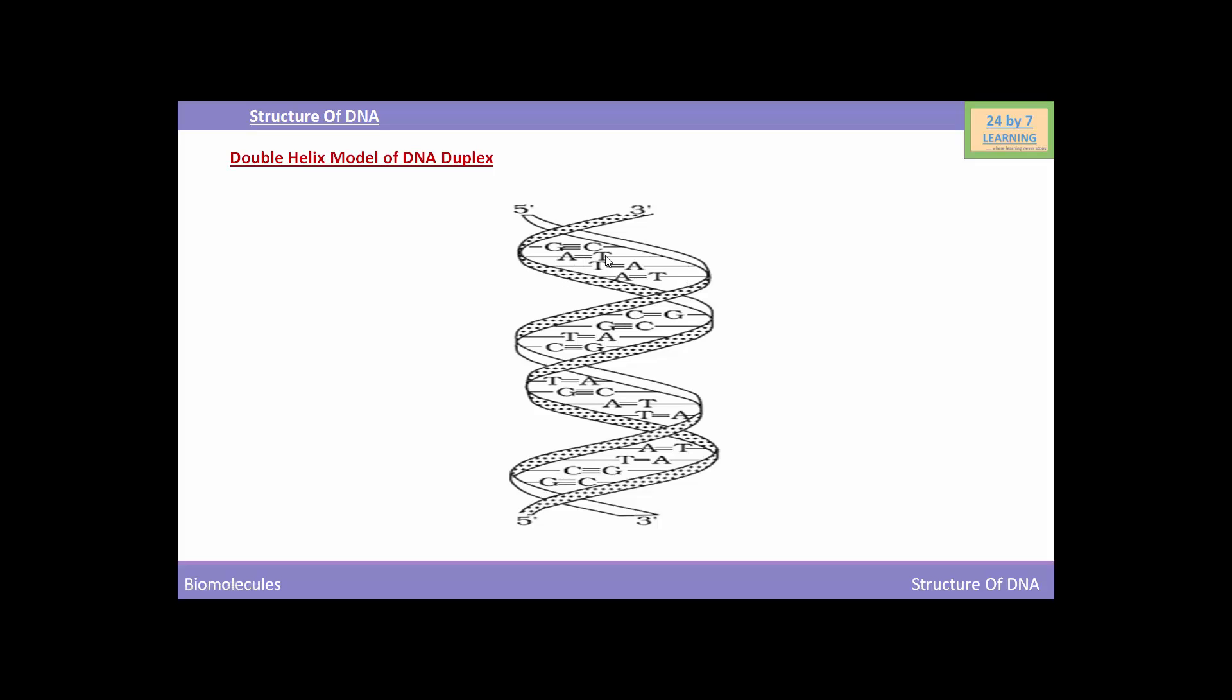Adenine always pairs with thymine. Adenine and thymine form two hydrogen bonds while guanine always pairs with cytosine. Guanine and cytosine form three hydrogen bonds.